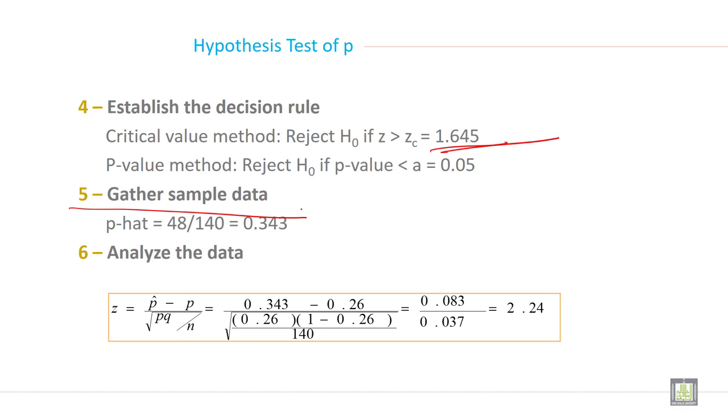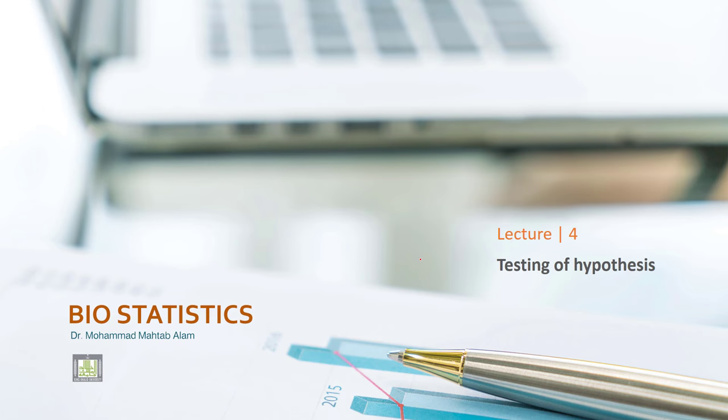Then step 5, gather sample data. P-hat is equal to 48 over 140 which equals 0.343. And step 6, analyze data. Just put all the values in the formula and you will get Z calculated 2.24 which is greater than Z table value or you can say critical value.